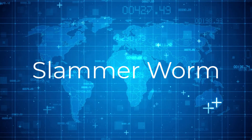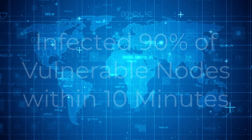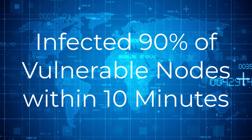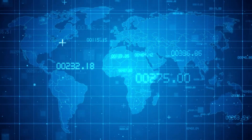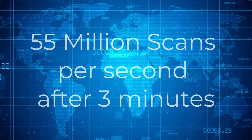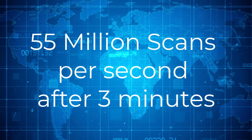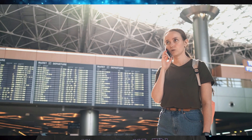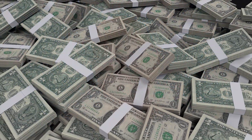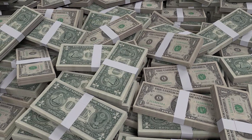The Slammer worm, back in 2003, infected 90% of vulnerable computers within 10 minutes of being released on the internet. It achieved its full scanning range of 55 million scans per second after just three minutes. Its DDoS attacks grounded transatlantic flights, closed down the Bank of America's cashpoint machines, and caused over £1 billion worth of damage. In this case, the motivation was simply to cause problems and chaos.